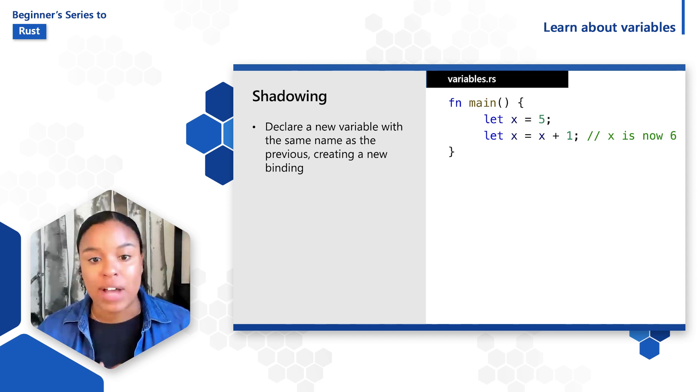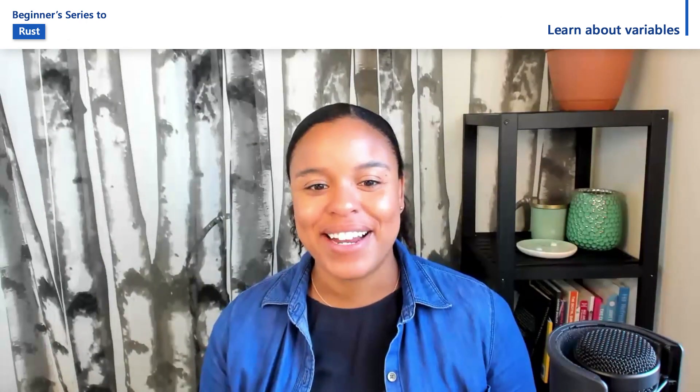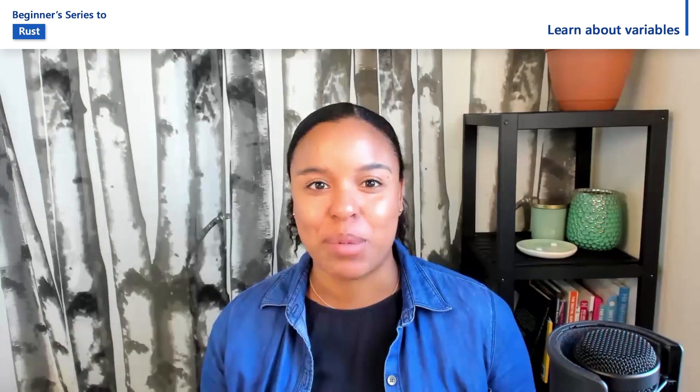Shadowing allows the value to be updated again as many times as we use the let keyword again. Each time we do that, we are essentially creating a new variable. Now that I've explained the basics of variables and how they work, next I'll demonstrate examples of variables in action.